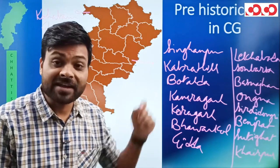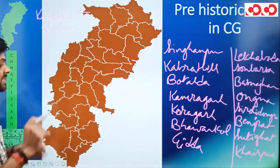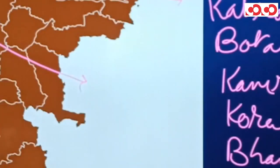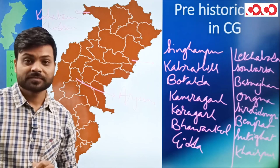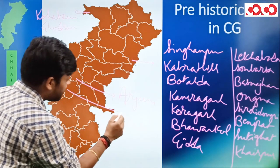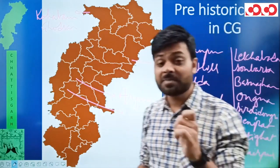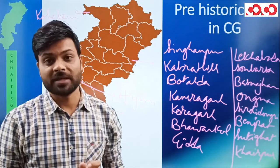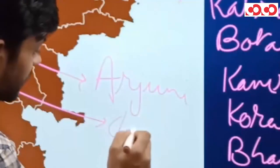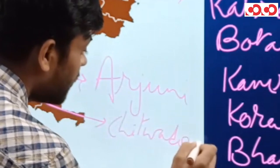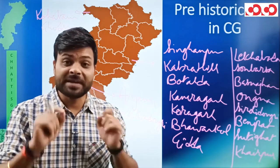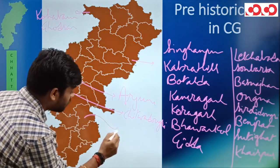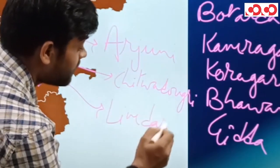Raigarh को 'Fort of Rock Shelters' या शैलाश्रयों का गढ़ कहते हैं। इसके बाद हम आ जाते हैं Durg district में — Durg district में एक location है जिसका नाम है Arjuni। इसके बाद हम आ जाते हैं Balod district में — Chitwadongri। आपको सभी books में Rajnandgaon मिलेगा, लेकिन Government of Chhattisgarh के latest publications के हिसाब से इसको Balod district में बता रहा है। इसके बाद है Kondagaon district, और Kondagaon district में है Limdariha।